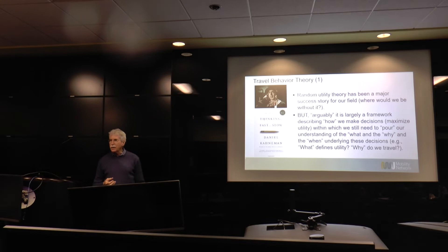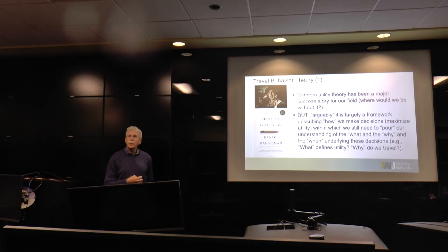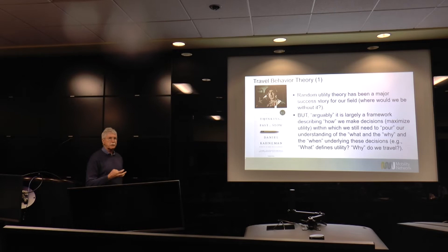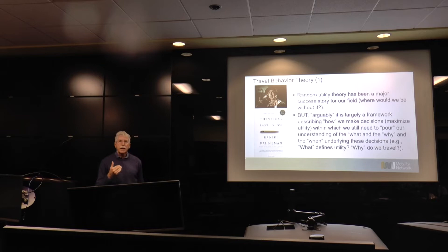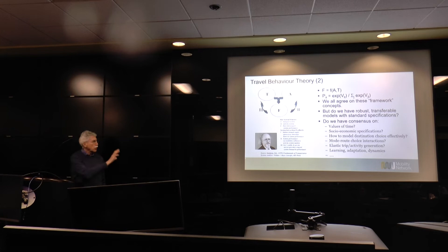Random utility theory is sort of a container we can pour whatever understanding we have into: what are people doing, what are the actual decisions, why are they making those decisions, when do they occur? Utility theory says we're choosing an alternative from a choice set C, but it tells us nothing about what that choice set should be, or what the variables in systematic utility should be. So we have to bring further understanding to it, and I think we're still lacking a lot of consistent, coherent, standardized views on values of time, the role of socioeconomics, how to model destination choice.